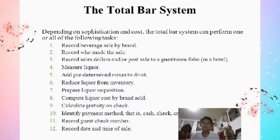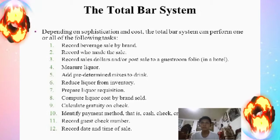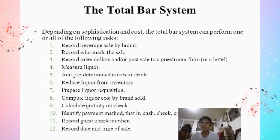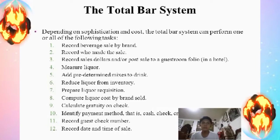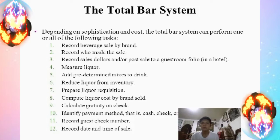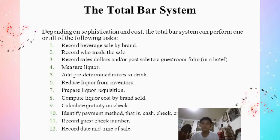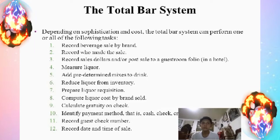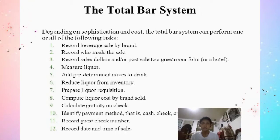A total bar system, depending on its sophistication and cost, can perform one or all of the following tasks: first, record beverage sales by brand; second, record who made the sales; third, record sales dollars or post sales to a guest room folio in a hotel; fourth, measure liquid; fifth, add a predetermined mix to a drink; sixth, reduce liquid from inventory; seventh, prepare a liquid request decision; eighth, compute liquid cost by brand sold.